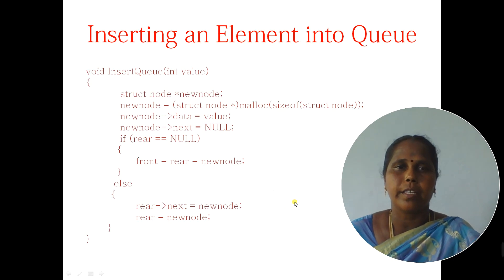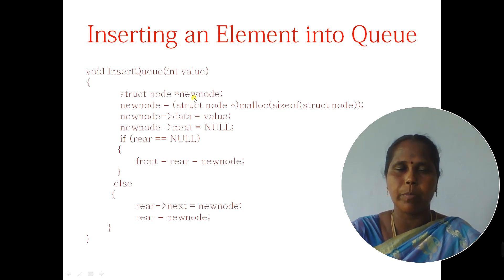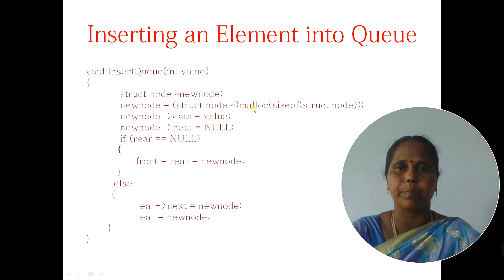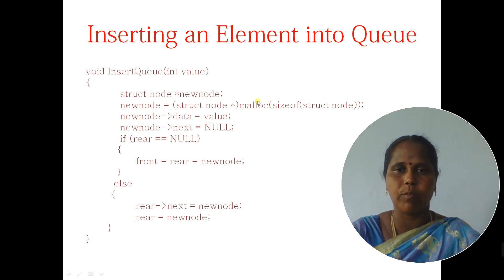To insert an element, I have defined a function insertQ. Here I created a node based upon the structure that we have defined. The data type is structure node and that node pointer is declared as new node. Every time to insert a new node, I have to allocate memory for the new node. For memory allocation, we can use the malloc function to allocate memory at runtime. The malloc function will return the void pointer. That void pointer is called a generic pointer. That pointer has to be converted into the node pointer by explicit type conversion.